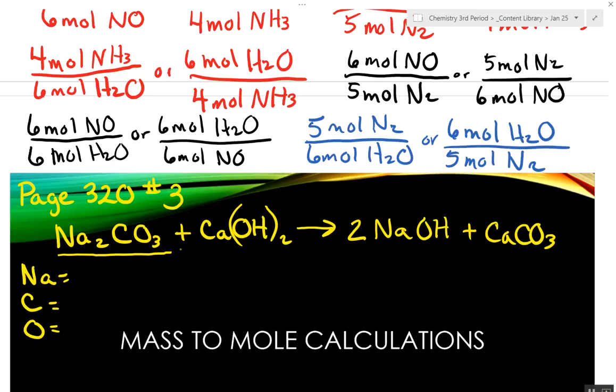Now they said to two decimal places. When they post the key, it won't be to two decimal places. But we're going to do it that way here. So how many sodiums do I have in Na2CO3? Somebody tell me how many sodiums I have. Two.